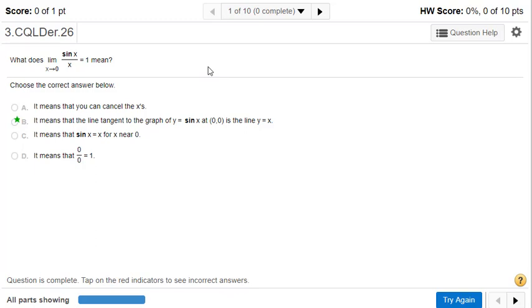Here we have the classic sine x over x limit as x goes to 0, and the fact that that equals 1. What does it mean? Several different options - I'm not going to discuss them all, but you can pause and take a look.